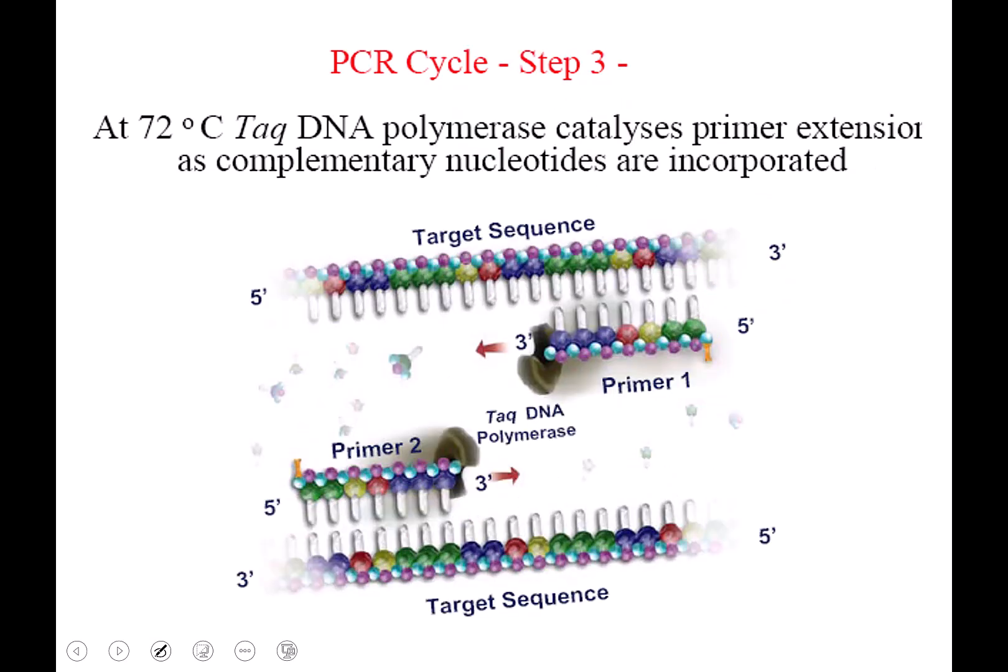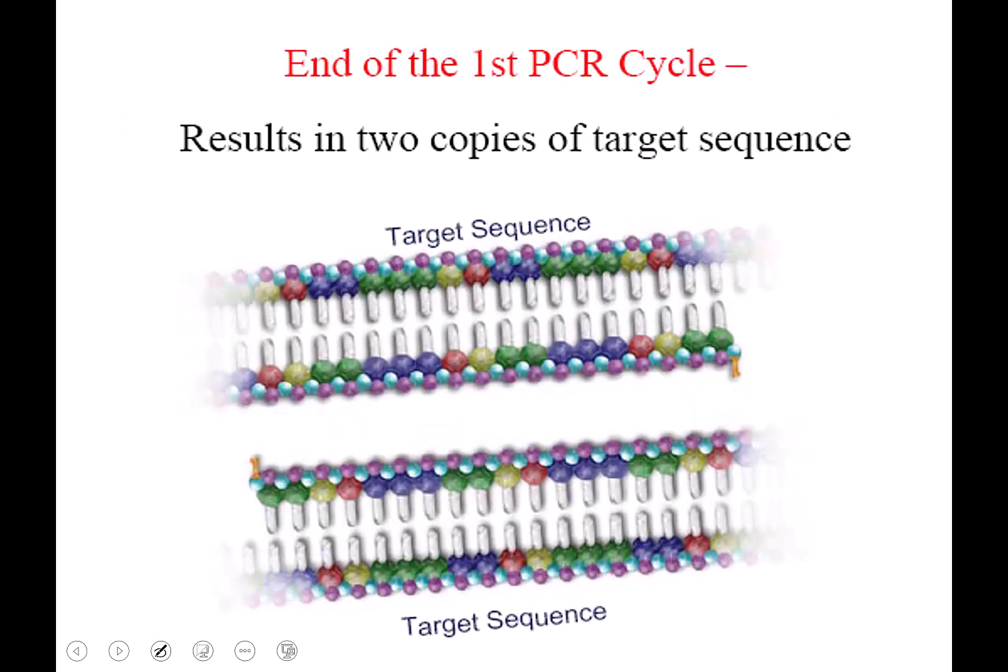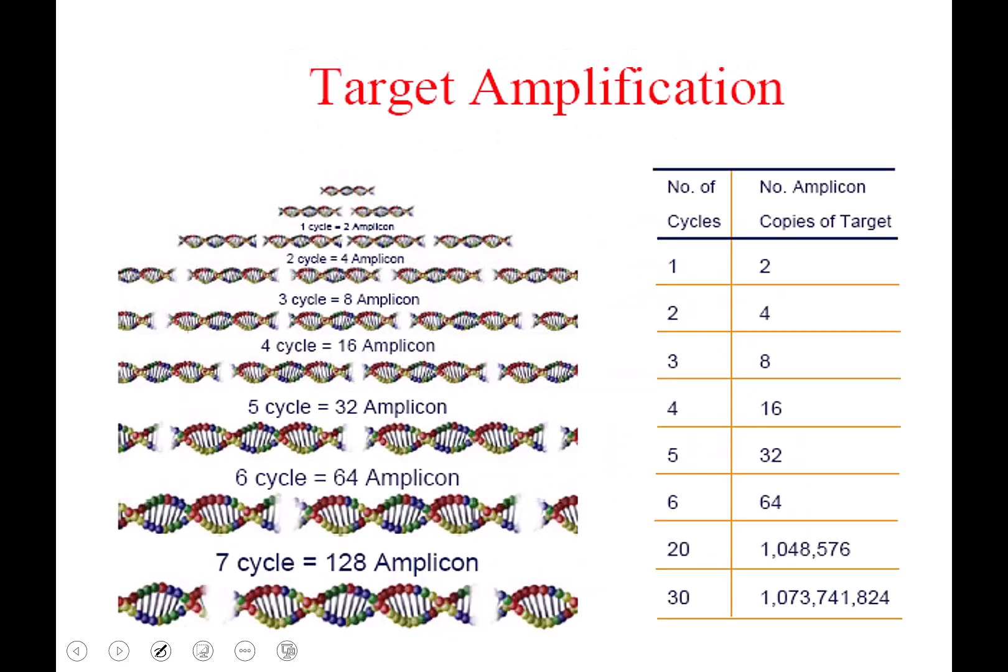Then at 72 degrees, our Taq polymerase is going to extend the primer and it's going to extend it all the way up to the place where your other primer is. And you get two copies of your target sequence. Isn't that lovely?